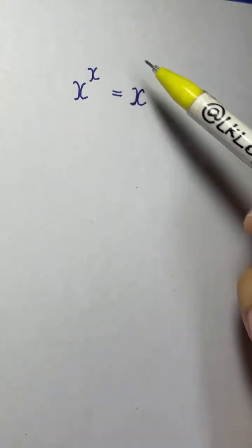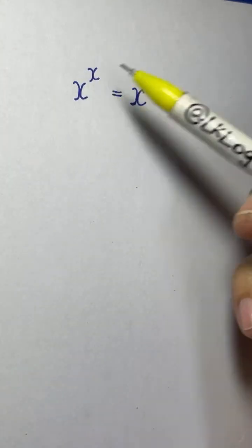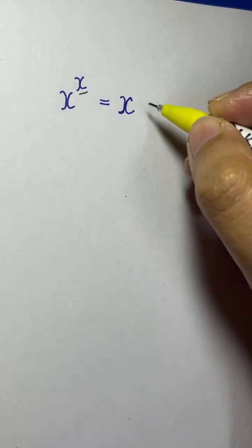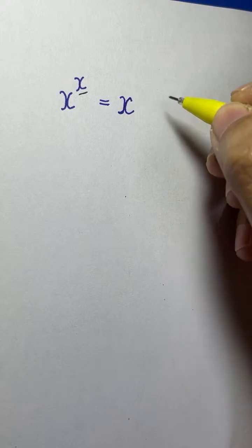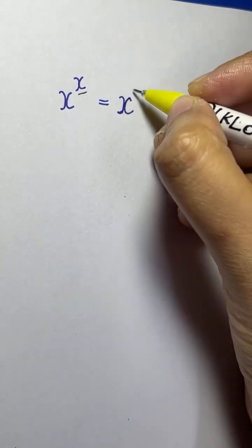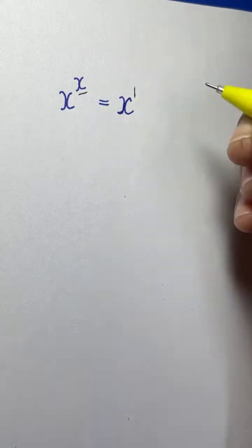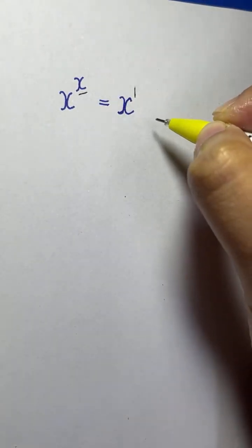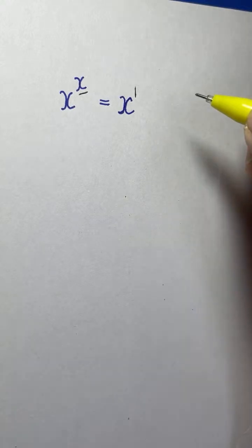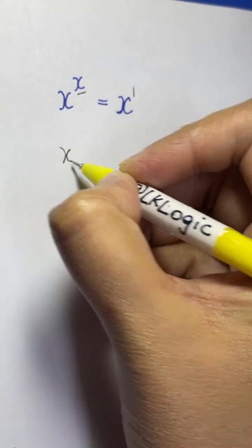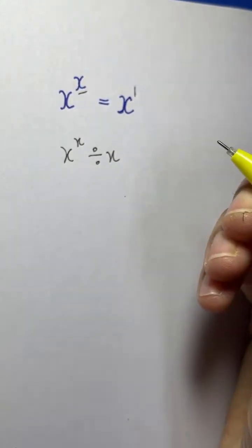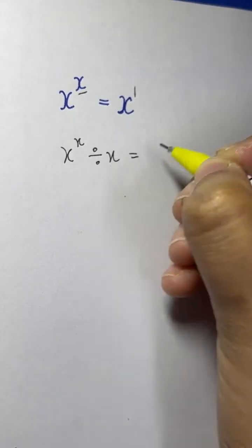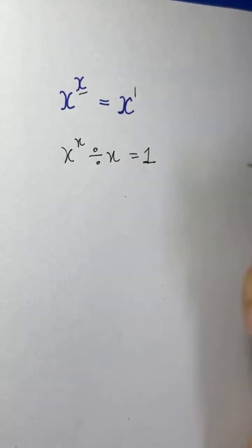Now here we have three x's: one x, this x is the exponent, and this is the base. So here we can write it as this has an exponent of 1. Let's divide both the left hand side and right hand side by x. So we have x to the power of x divided by x equals to x divided by x, which equals to 1.